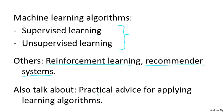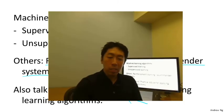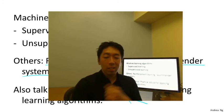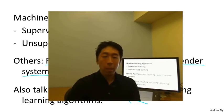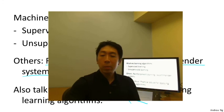One of the other things we'll spend a lot of time on in this class is practical advice for applying learning algorithms. Teaching about learning algorithms is like giving a set of tools, and equally important — or more important — than giving you the tools is to teach you how to apply them. I'd like to make an analogy to learning to become a carpenter. Imagine someone teaches you carpentry and says: here's a hammer, here's a screwdriver, here's a saw — good luck. That's no good. You have all these tools, but the more important thing is to learn how to use them properly. There's a huge difference between people who know how to use machine learning algorithms well versus those who don't.